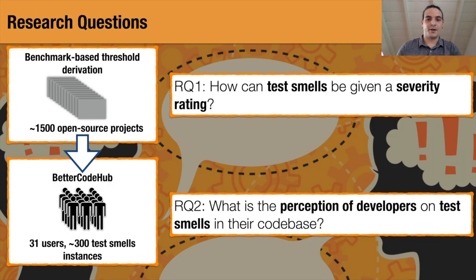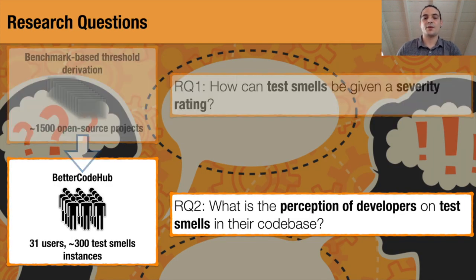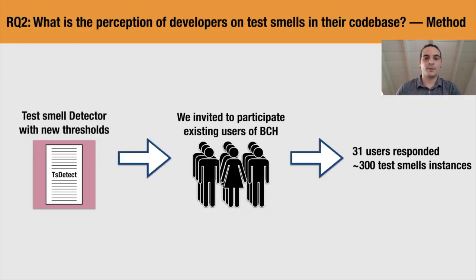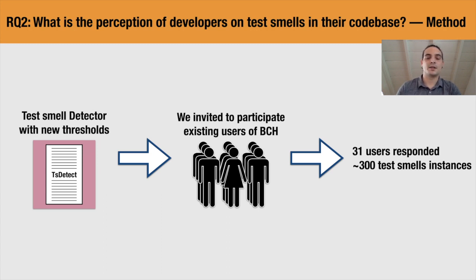Once we defined new thresholds, we moved to our second research question: how do developers perceive test smells on their own codebase? To this aim, we took the test smell detector with the new derived thresholds, inserted it into Better Code Up, and asked Better Code Up users to participate in our study. 31 users did, rating around 300 test smell instances.